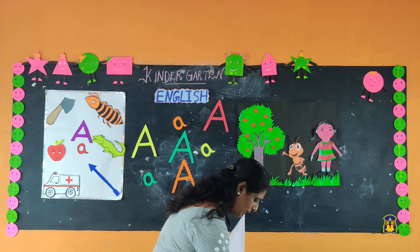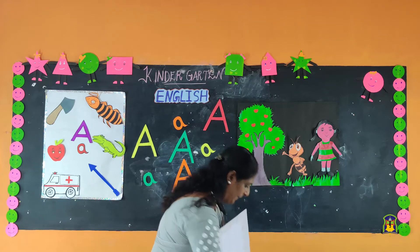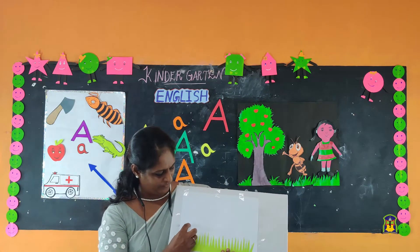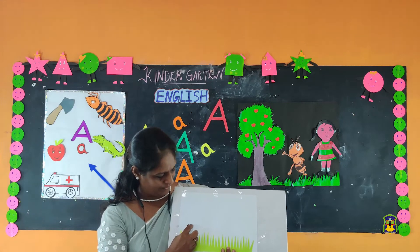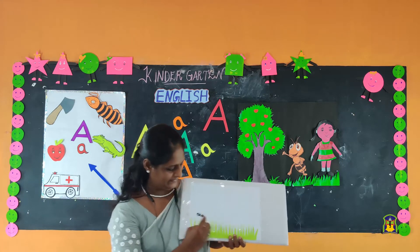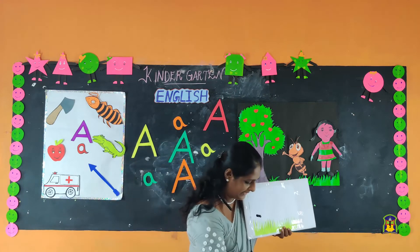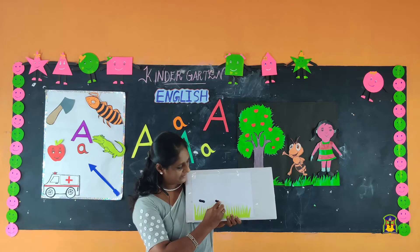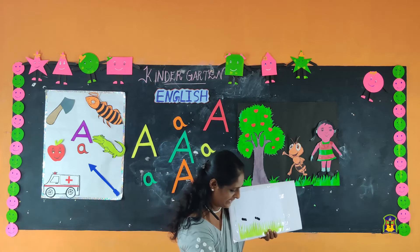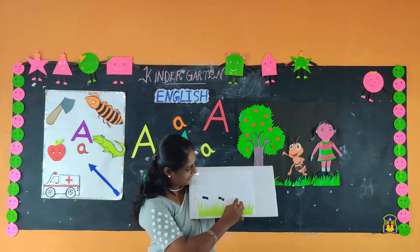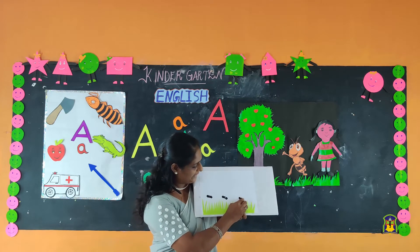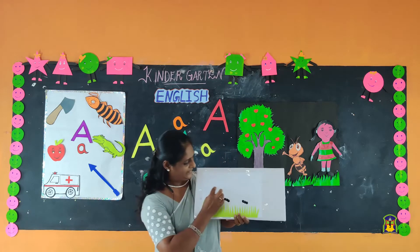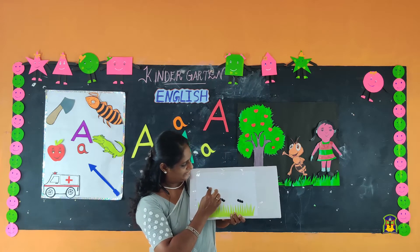Dip your pointer into the paint and put it on the hand's body. See? One, two, three. And again, one, two, three. And once again, one, two, three.